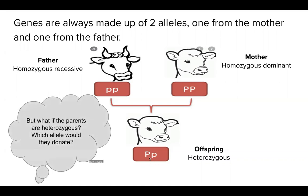However, it's not as clear if both parents were to be heterozygous, or even if one parent is heterozygous, which allele would they donate? Would it be the dominant one or the recessive one?